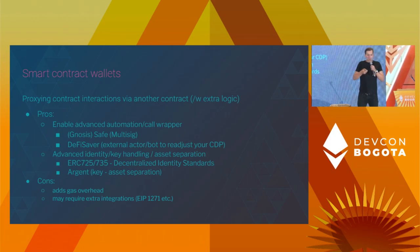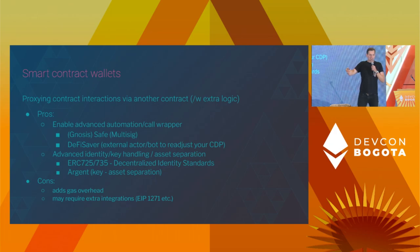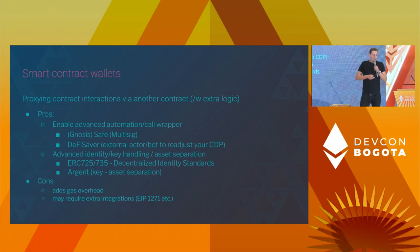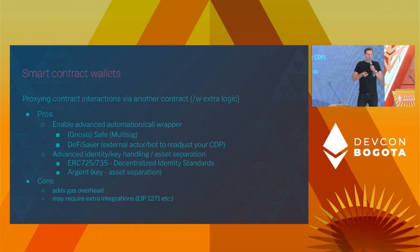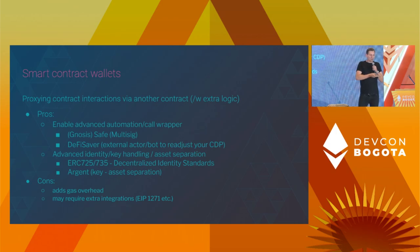Smart contract wallets aren't useful for everything — they have some downsides. There's especially the gas overhead because you're using an extra proxy; you have to do more computation in every single transaction. Secondary, you may require some level of integration. EIP-1271 for signed messages is one example of what everyone else has to integrate in order for smart contract wallets to work just as a user account would.